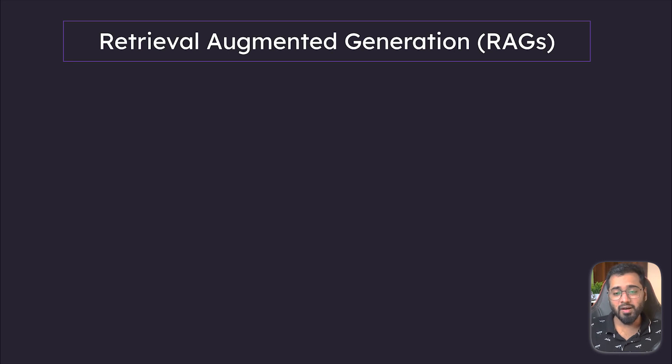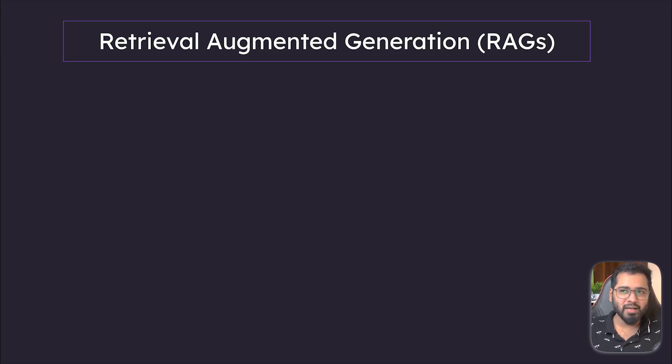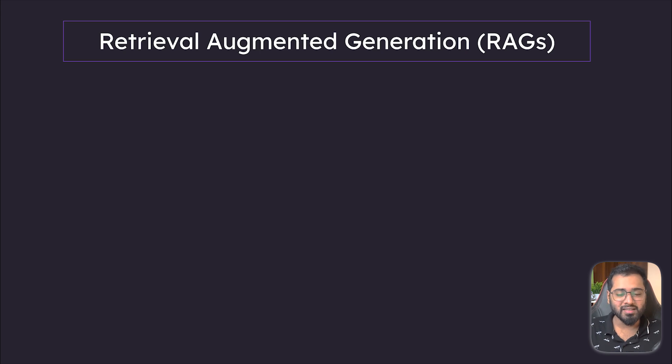Hello everybody. In this section we are going to start looking at the fourth component of launching called RAGs, or Retrieval Augmented Generation. In my opinion, RAGs is a pretty misunderstood topic because it can be a little tricky for beginners to understand, especially if you are completely new to concepts like embeddings and vector databases. But don't worry, we are going to be taking it slow, step by step.